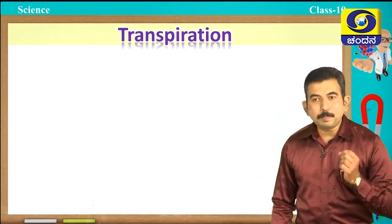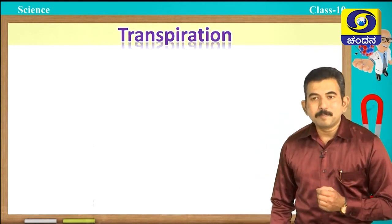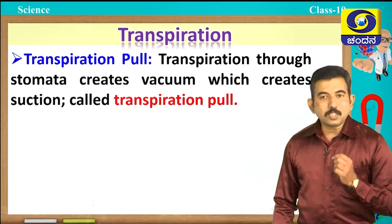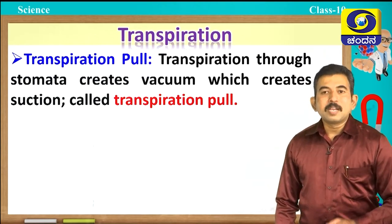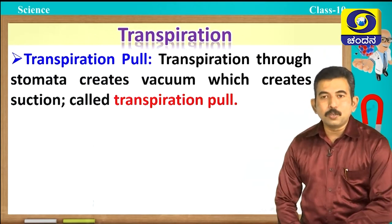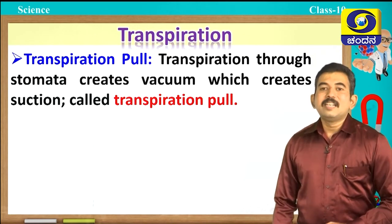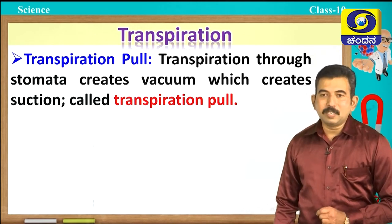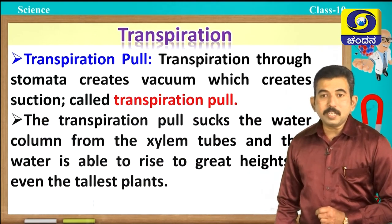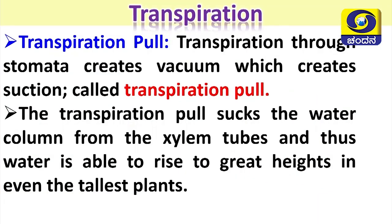Have you heard about transpiration pull? Transpiration through stomata creates a vacuum which creates suction, and this is called transpiration pull. This transpiration pull sucks the water column from the xylem tubes, and thus water is able to rise to great heights even in the tallest plants.